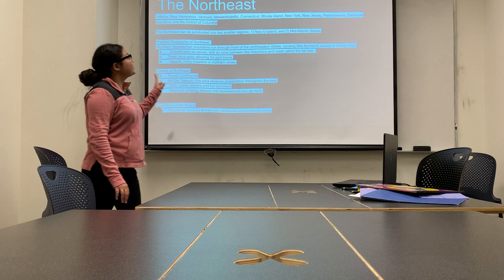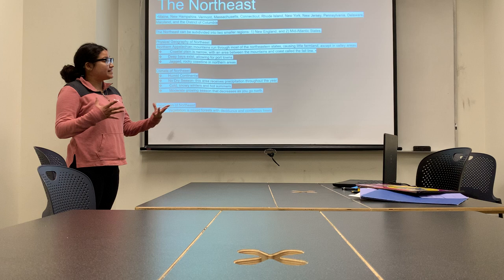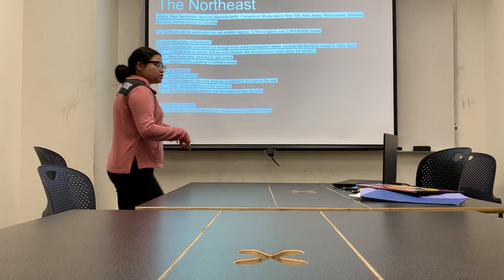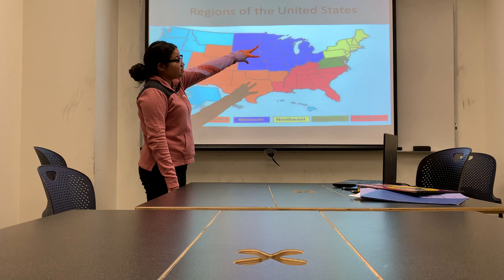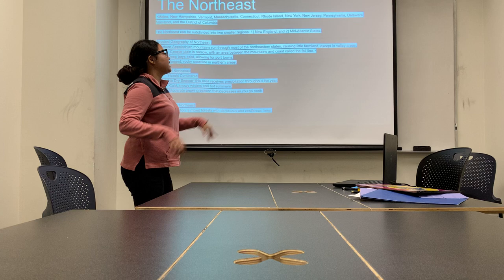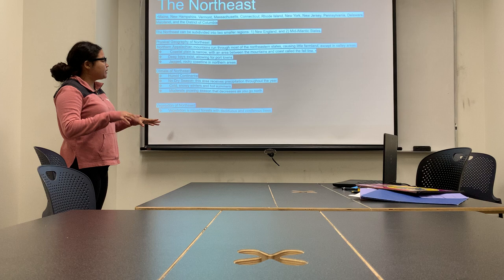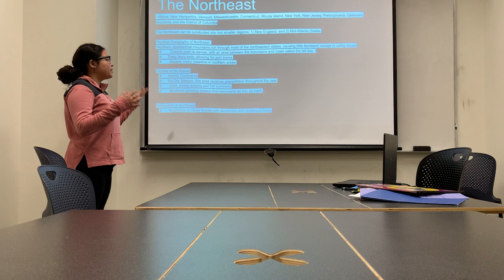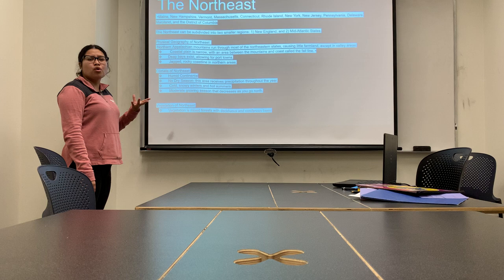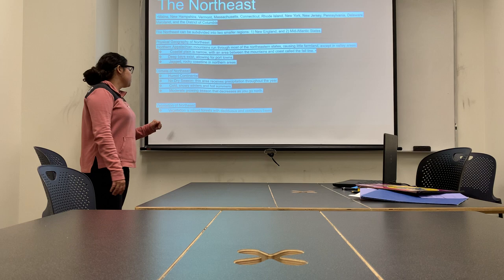So we're going to start with the Northeast region, which includes states like Maine, New Hampshire, Vermont, Massachusetts, and Connecticut. The Northeast region can be divided into two smaller regions — the Mid-Atlantic and the Northeast — combined together. In this region we find the Northern Appalachian Mountains: it's pretty jagged and rocky with coastlines. The climate is humid with no dry season, so it rains year-round. It's cold and snowy, but it also has warm, hot summers. The growing season decreases as you go north, and the vegetation is mixed forest.